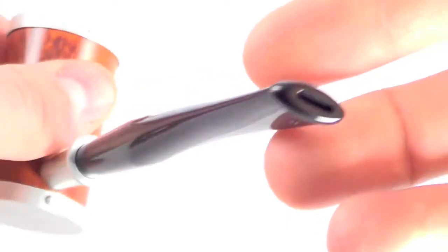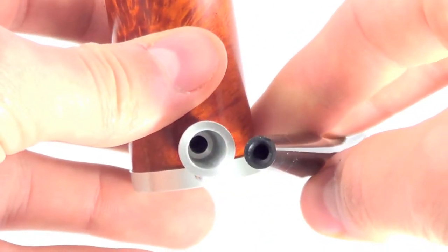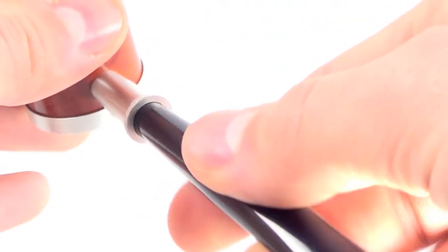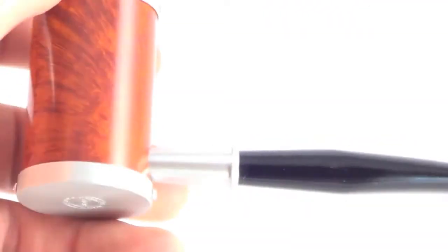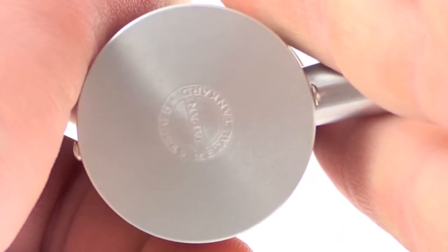The stem is untouched. You can see it's a nice spigot style stem. The pipe is marked Tsuge Japan metal tinkered.